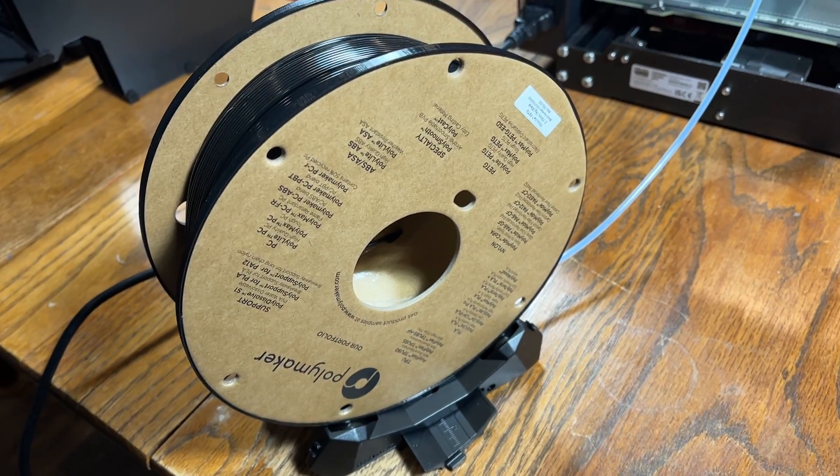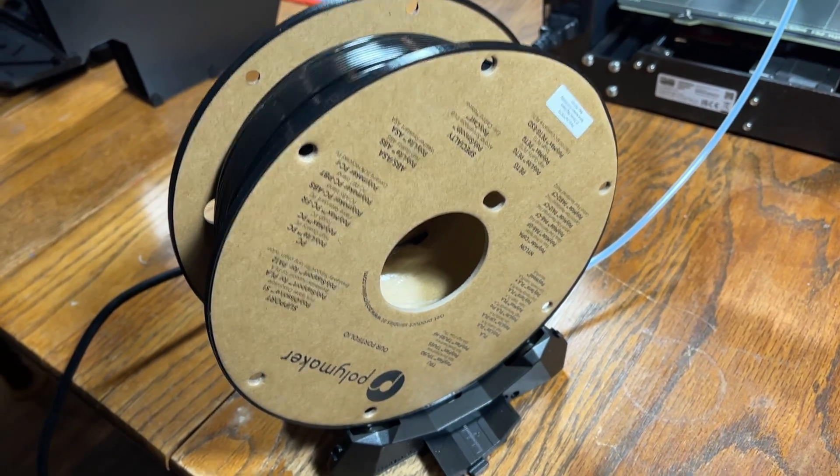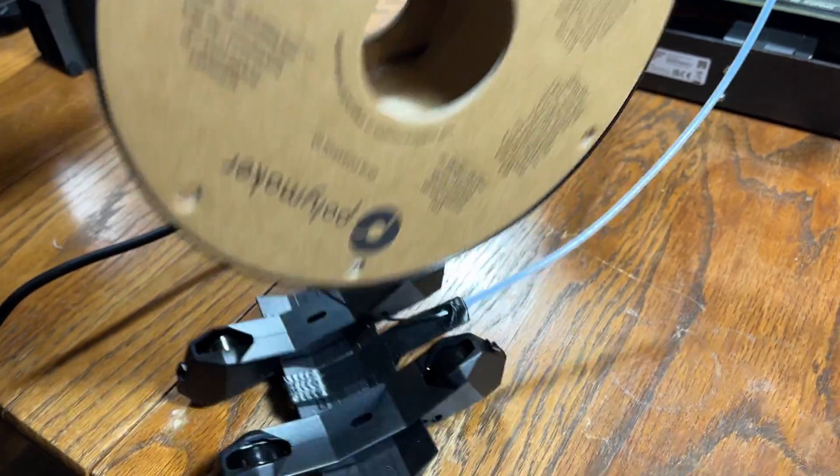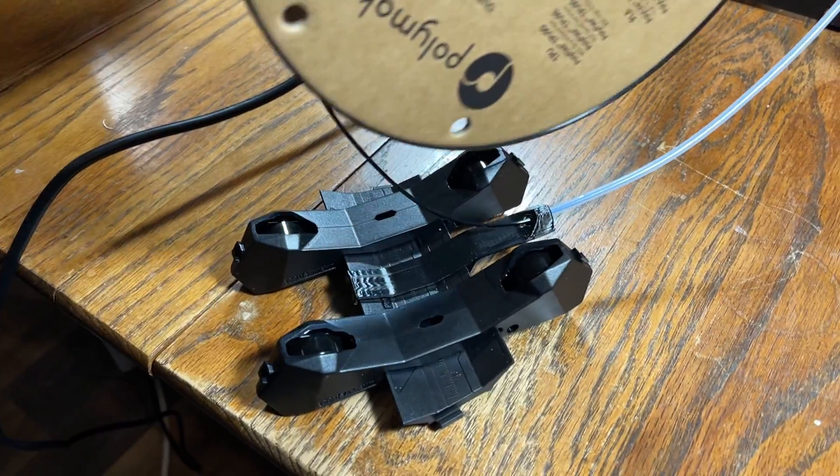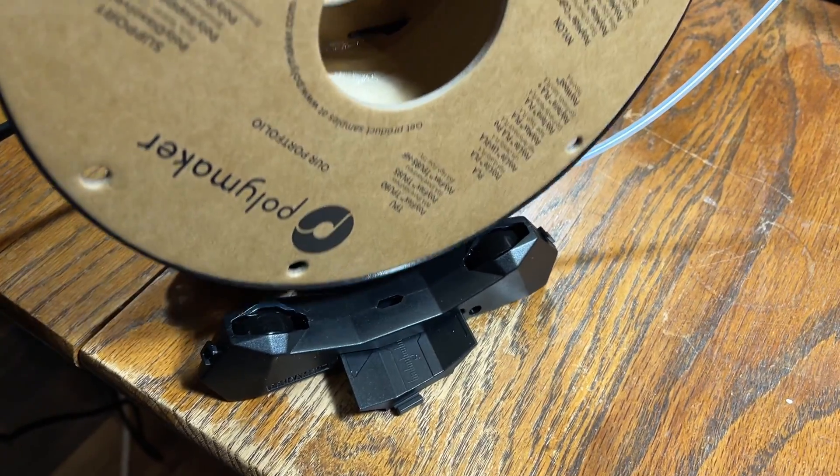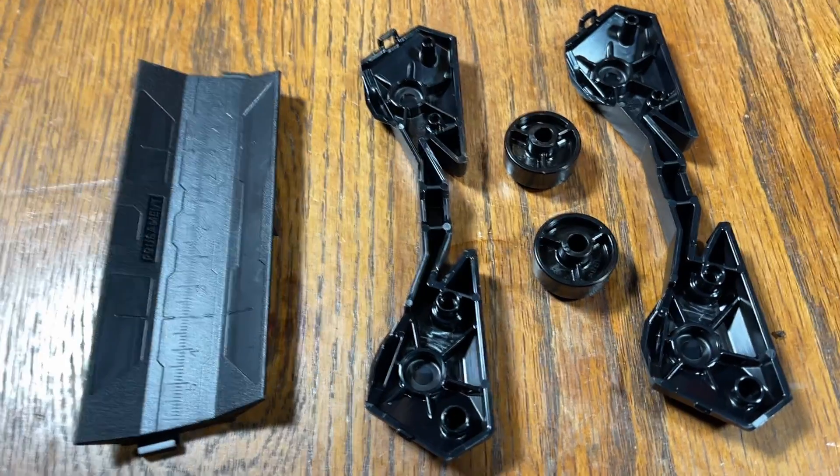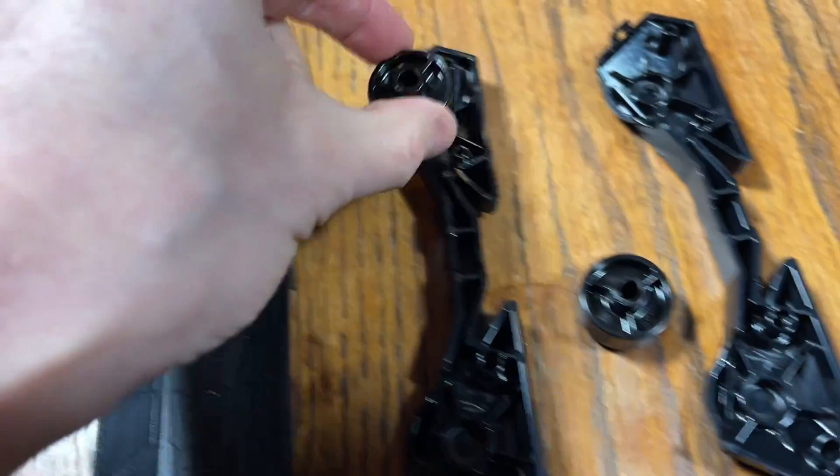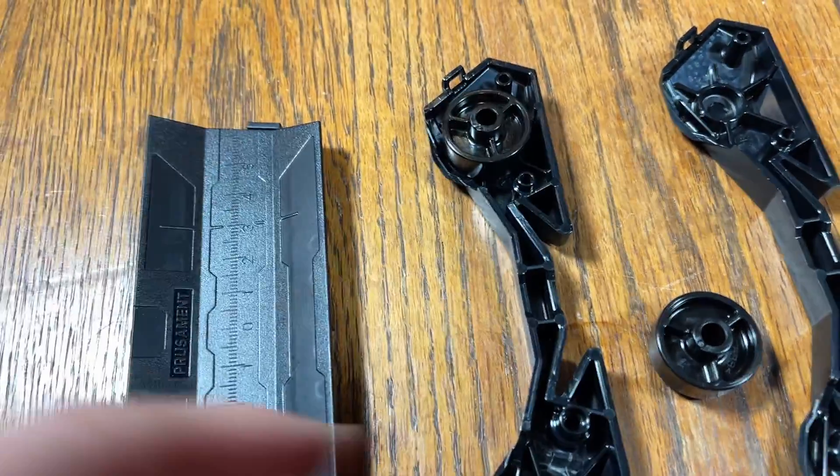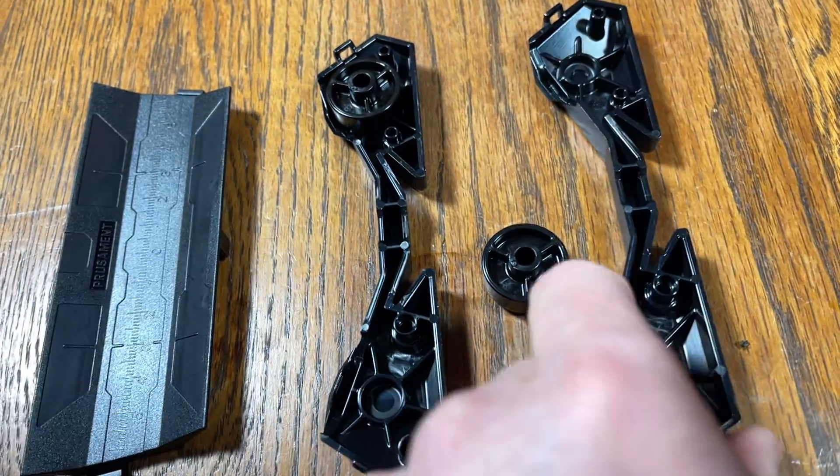This is a spool holder that comes with the new Prusa MMU and you get five of these. They click together and rest in these little wheels. This is what the spool holder looks like before you put it together. These wheels here sit inside of a cavity and then these two things click together.